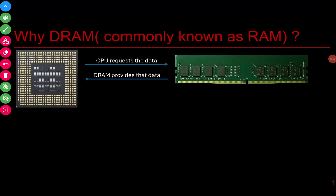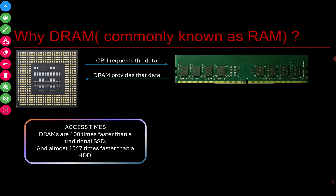Today we will understand how RAM works and what is the architecture of RAM. In industry it is commonly referred to as DRAM, but in the consumer market DRAM is known as RAM. The first question that comes to mind is why do we need RAM? We need RAM because it is much faster compared to secondary storage. If we send data directly from secondary storage to the CPU, the CPU has to wait a lot and will sit idle, which decreases performance.